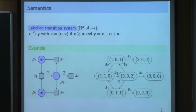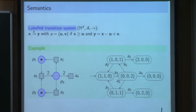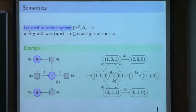One token in P2 and 0 tokens in place P3. Then you can execute A3, because the first component of A3 is removing 1 from P1, removing 1 from P2, and adding 2 on P3. So the configuration you obtain is 0 0 2. You can continue that way and you get a graph. In this case the graph is finite, but in general when you look at the reachable part of your graph starting from a configuration, it can be infinite.